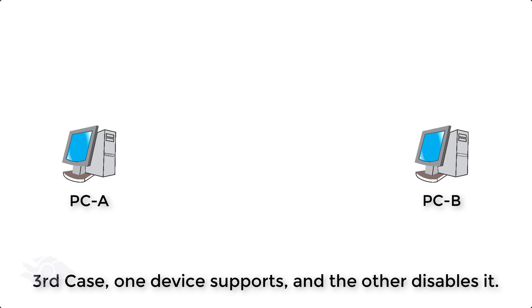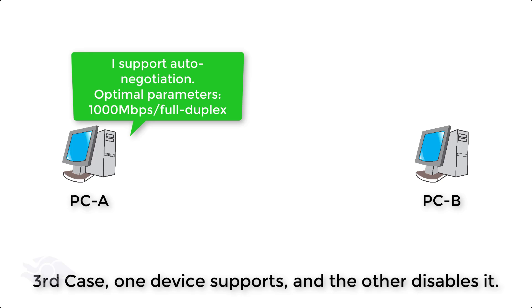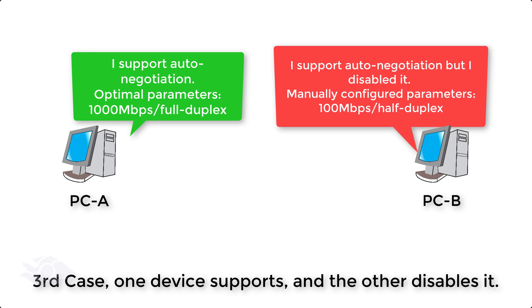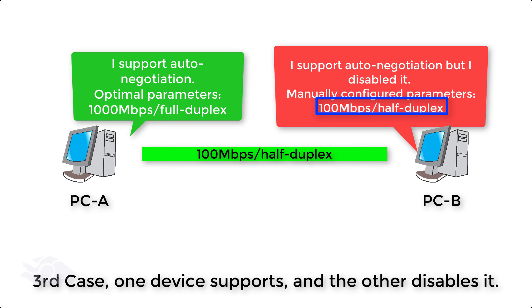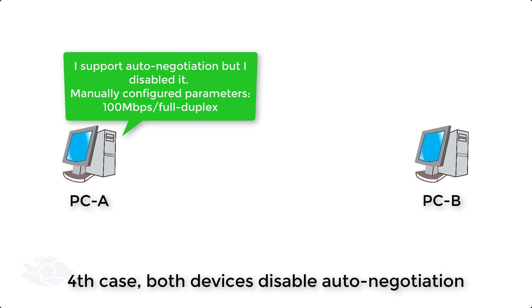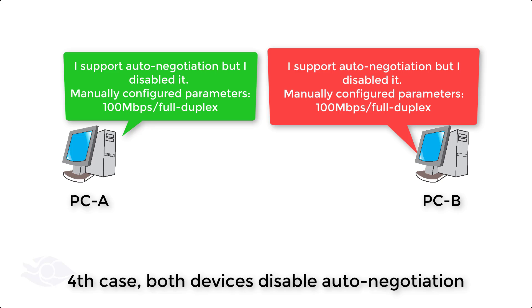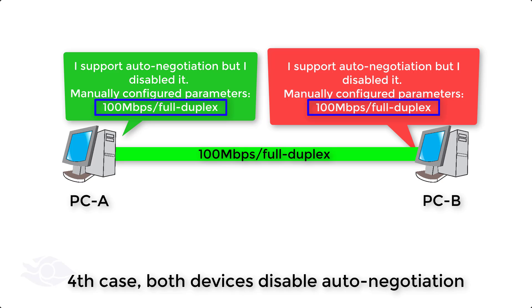Third, if PCA supports auto-negotiation and PCB disables its auto-negotiation function, the working mode for both will be based on the working mode of PCB, provided that PCA has those capabilities. Fourth, if PCA and PCB both disable their auto-negotiation function, the working mode that will be manually configured must be the same for both devices to communicate properly.